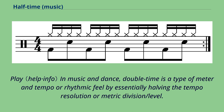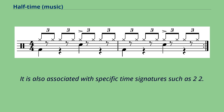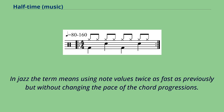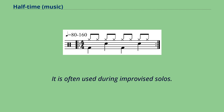In music and dance, double time is a type of meter and tempo or rhythmic feel achieved by essentially doubling the tempo resolution or metric division level. It is also associated with specific time signatures such as 2/2. In jazz, the term means using note values twice as fast as previously but without changing the pace of the chord progressions. It is often used during improvised solos.